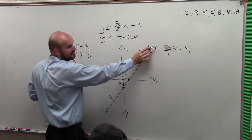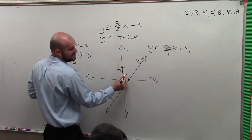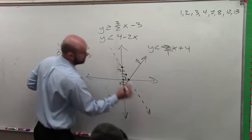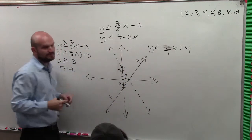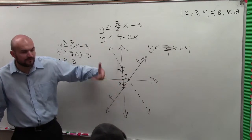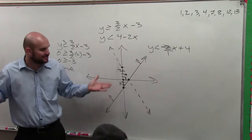Then notice this is a less than sign, so it's dashed, right? Now, for systems of equations, we were all cared about where they intersected, right? For systems of inequalities, we're not that concerned about it.